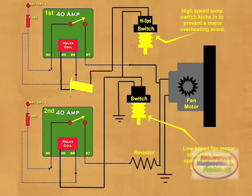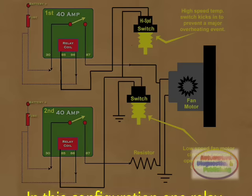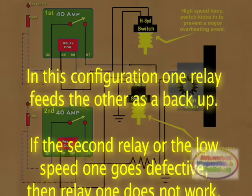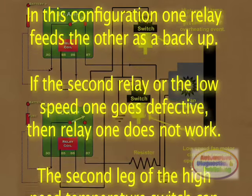Terminal 86 of relay 1 is connected to power at the fuse. Terminal 85 is where the trick is. Terminal 85 is connected to one side of the temperature switch. The other side of the switch goes to the output of the other relay. In this configuration, one relay feeds the other as a backup. If the second relay or the low speed one goes defective, then relay 1 does not work.